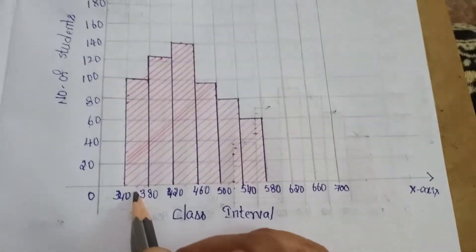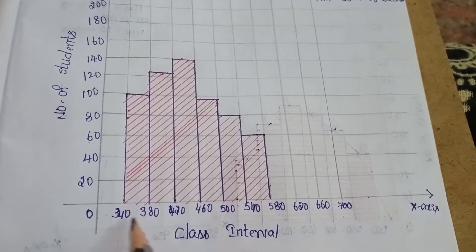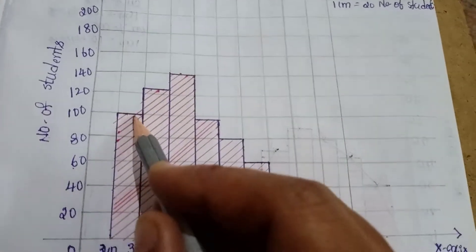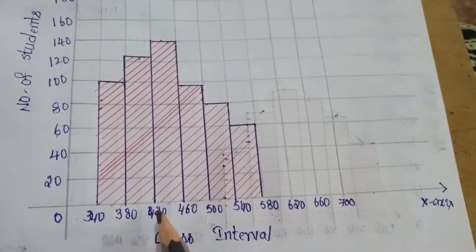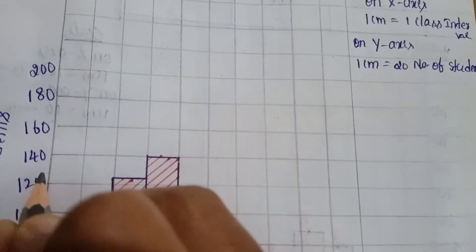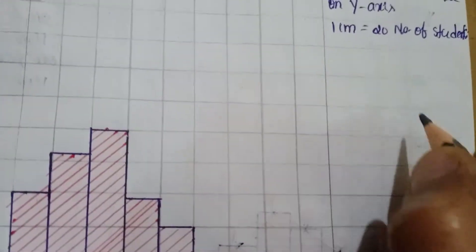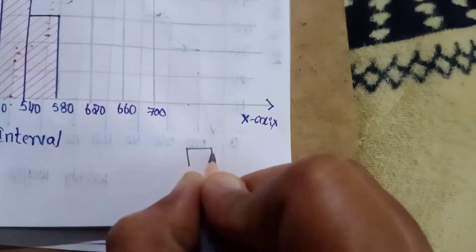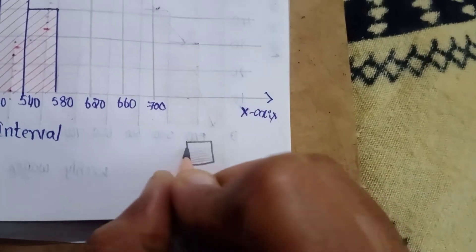You can draw this. For 340 to 380, the number of students is 30, so you draw the bar up to 30. For the next interval, the number of students changes accordingly — you can draw this bar as well.